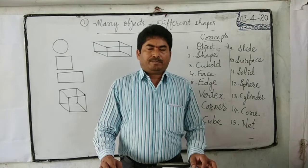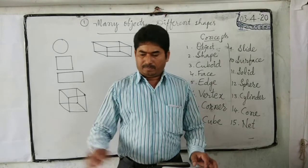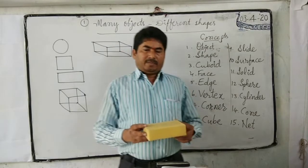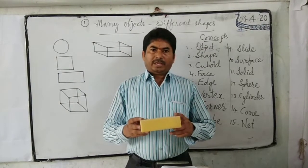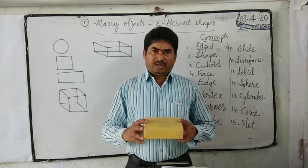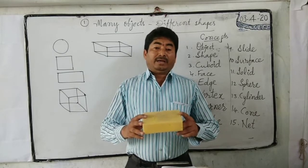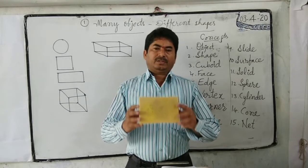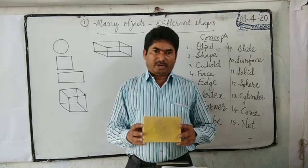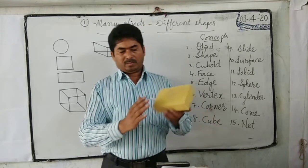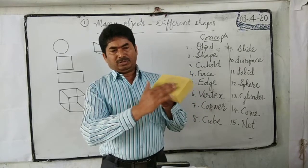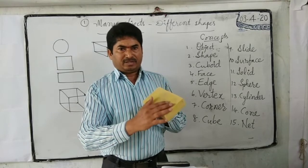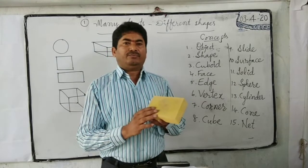Next, cube. What is a cube? A solid object with equal opposite rectangular faces is called a cube. The flat surface of an object is called a face.